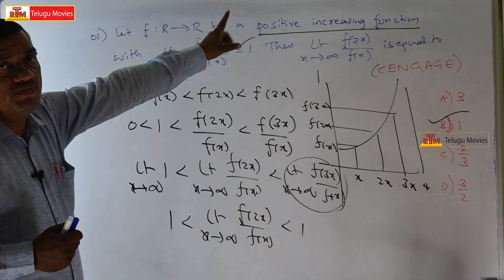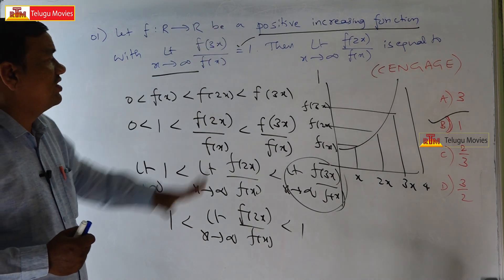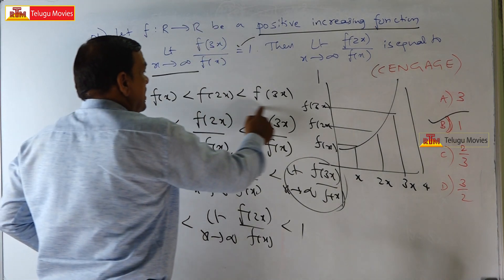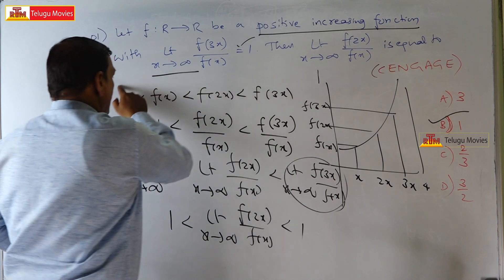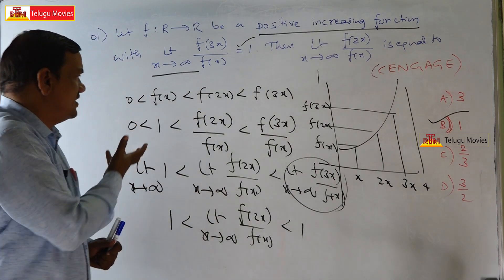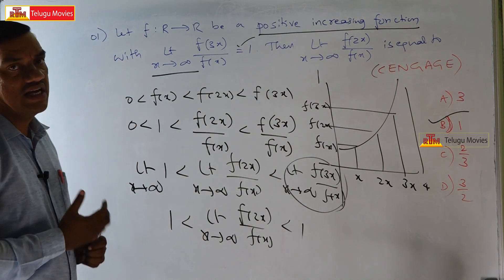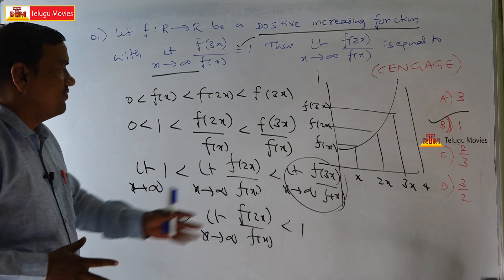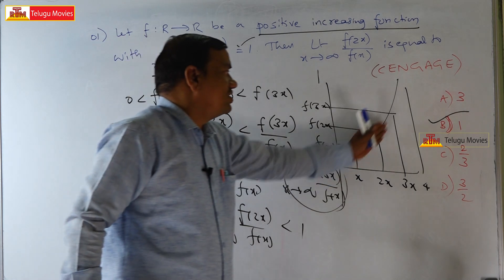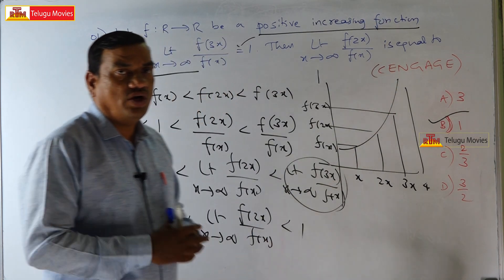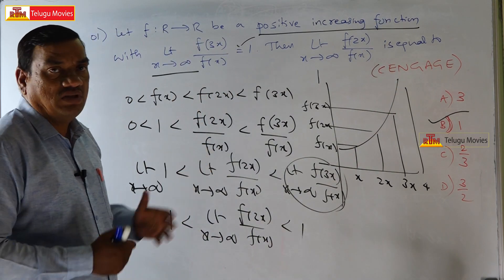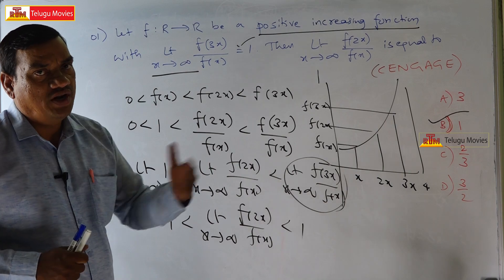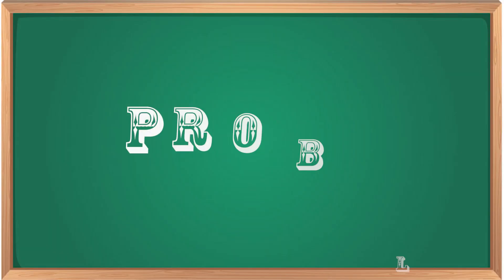Whenever a positive increasing function is given, you should get the idea: 0 < f(x) < f(2x) < f(3x). I hope you understand this solution. Let us go to the next problem.